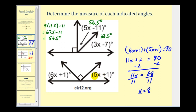For this angle here, we'd have five times eight, that's forty, plus one — so forty-one degrees. We know these two angles are complementary, so this should leave us with forty-nine degrees here. Let's just check it: six times eight is forty-eight, plus one — and that is forty-nine degrees.